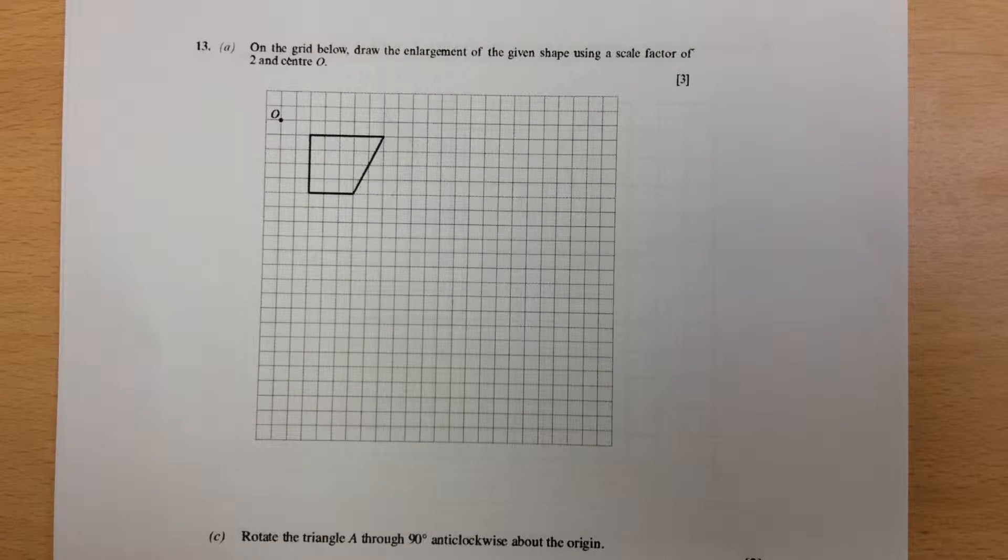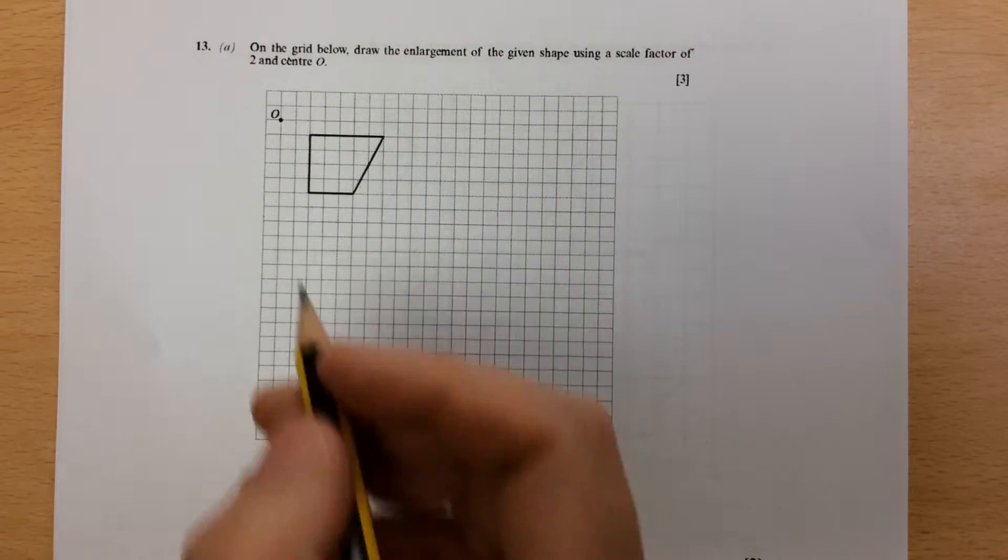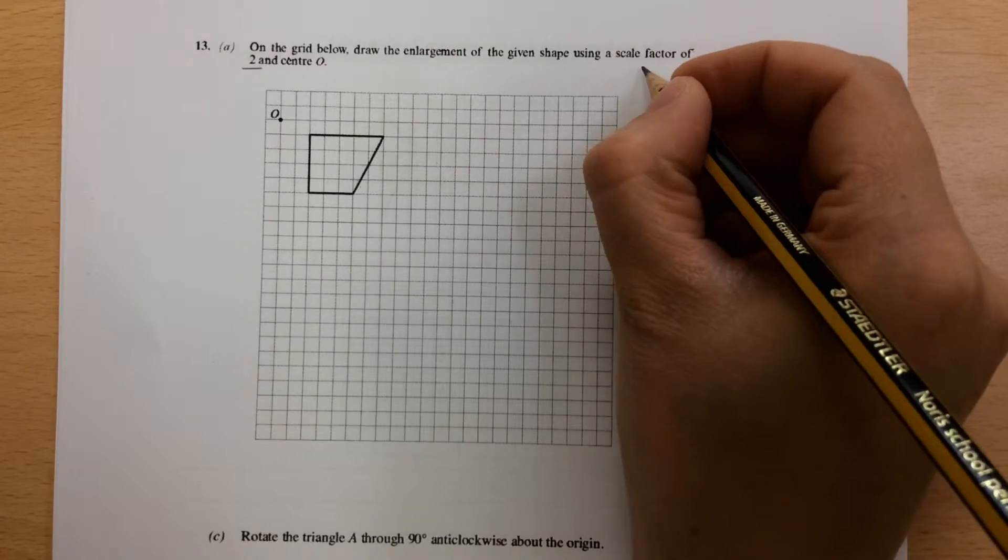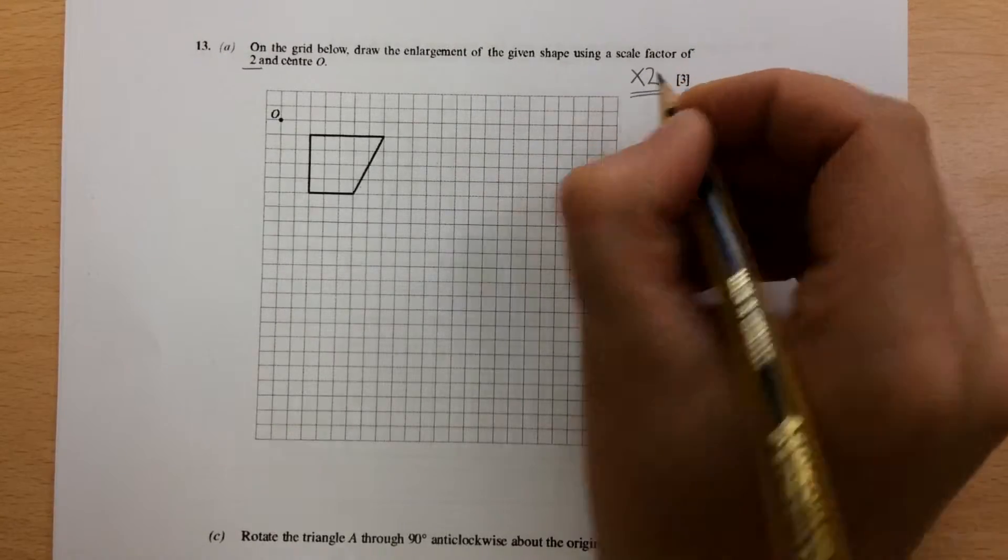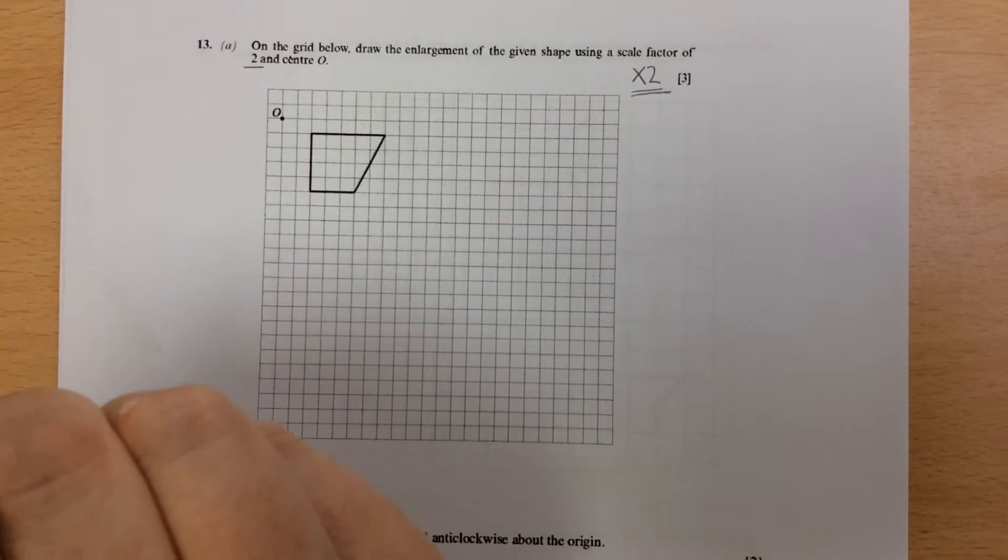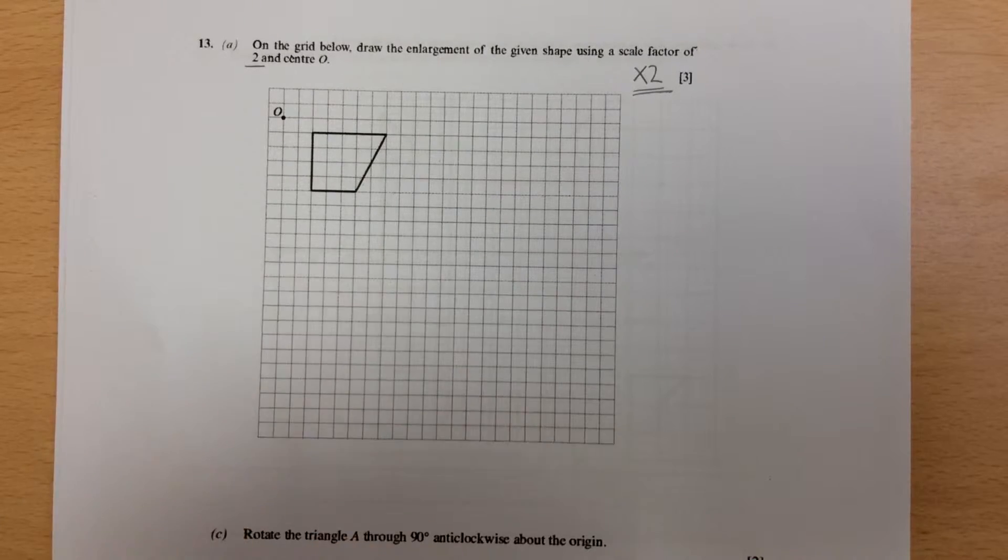Section 31, Rotations and Enlargement, page 49. The first question is enlargement. It's by a scale factor of 2, so everything's going to increase by 2. It's giving you a center of enlargement. That means it increases from that point.